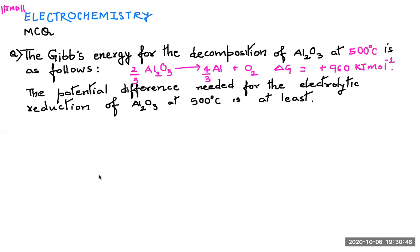The question on screen is: the Gibbs energy for the decomposition of aluminium oxide at 500 degrees centigrade is given. The equation is: 2/3 Al₂O₃ → 4/3 Al + O₂, and the change in Gibbs energy for the reaction is +960 kilojoule per mole. They want us to find the potential difference needed for the electrolytic reduction of aluminium oxide at 500 degrees centigrade.